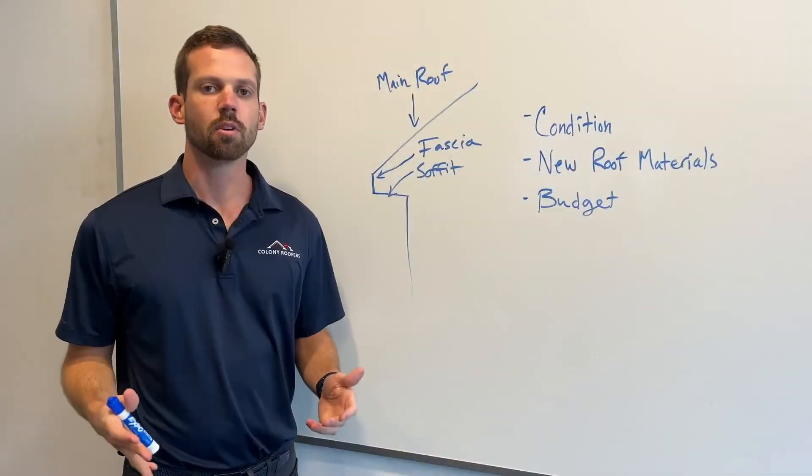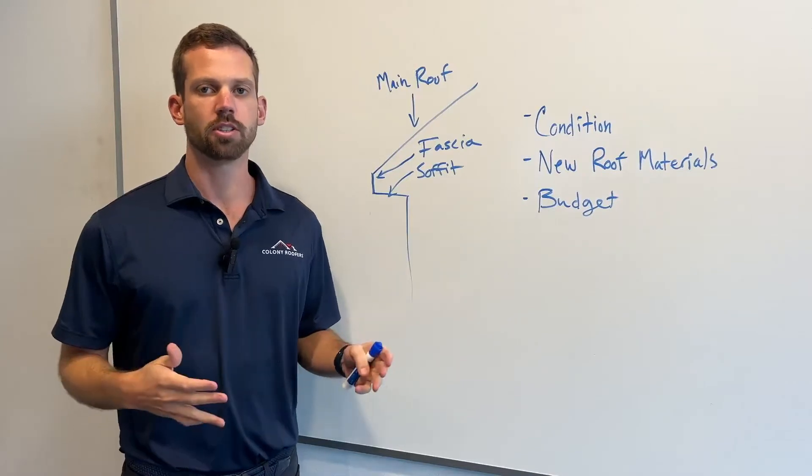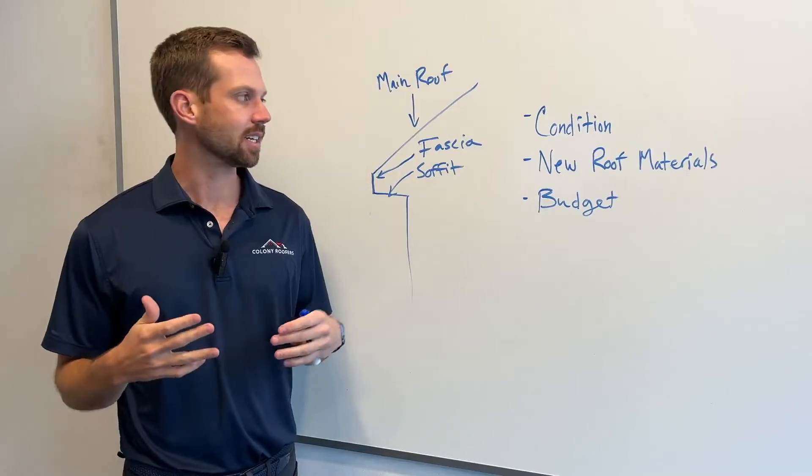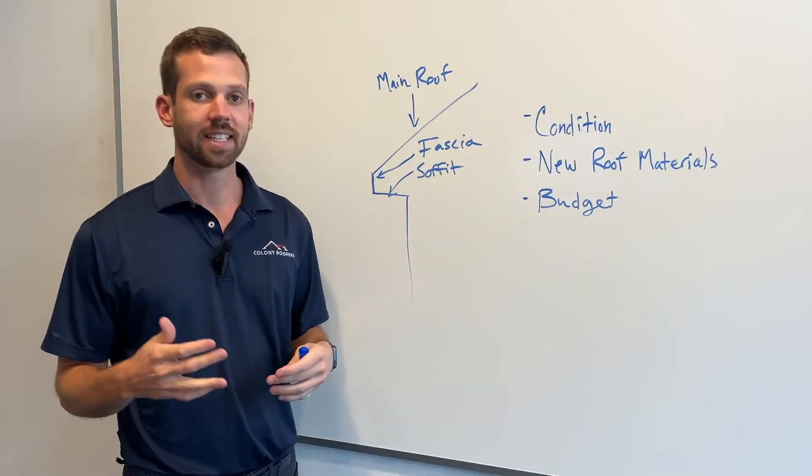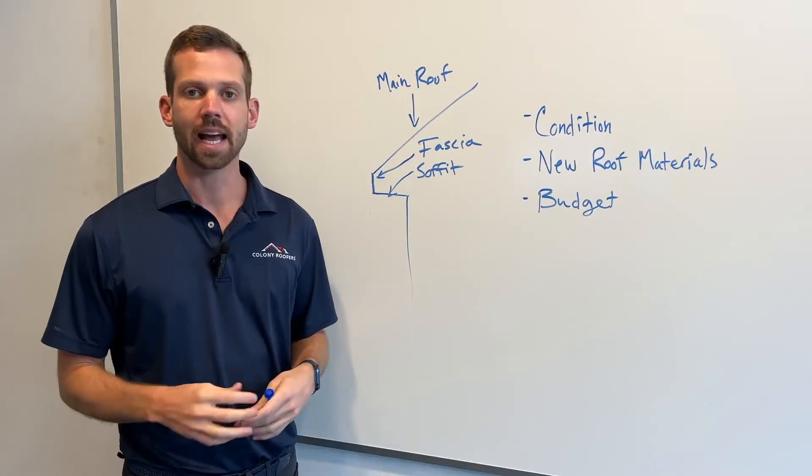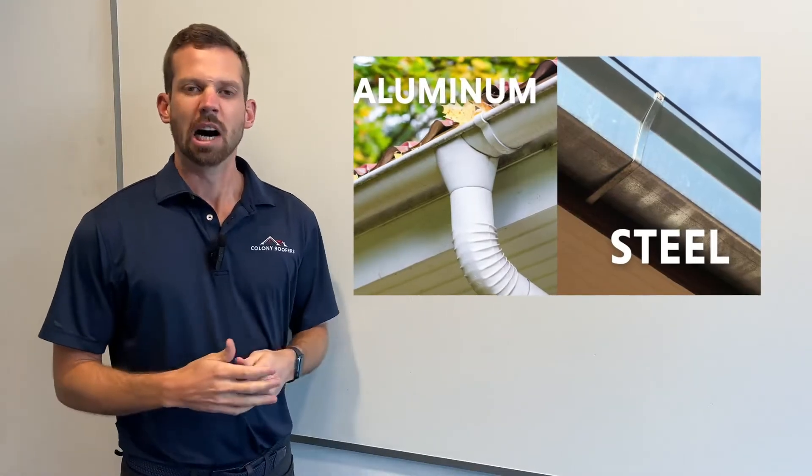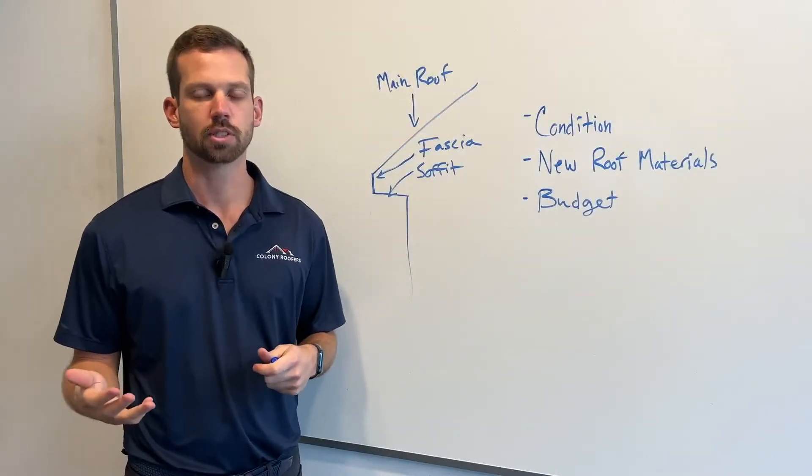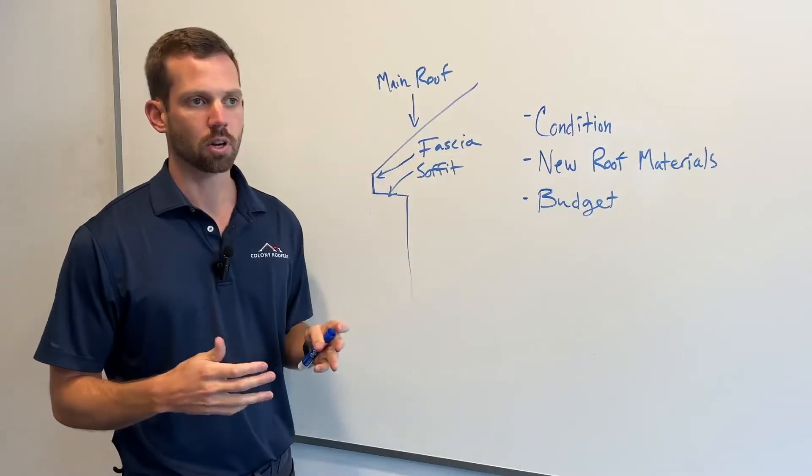All right, so the first thing we want to talk about when we are asking the question should you replace your gutters at the same time that you're replacing your roof is what's the existing condition of your gutters. There's a few different types of metal that they might be made out of. They're almost always going to be made out of either aluminum or steel. Aluminum is used a lot more on residential, steel is used a lot more on the commercial side of gutters and downspouts, but the condition is something you want to look at.